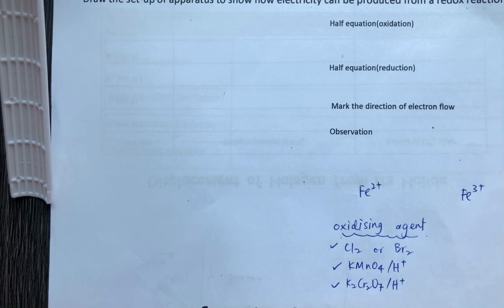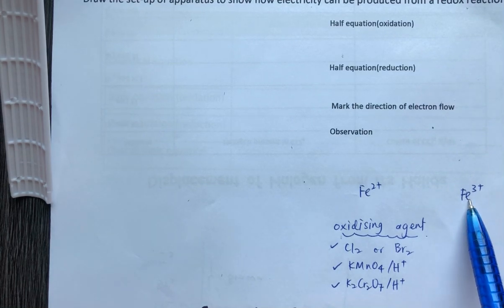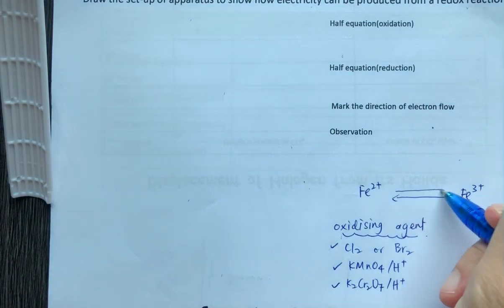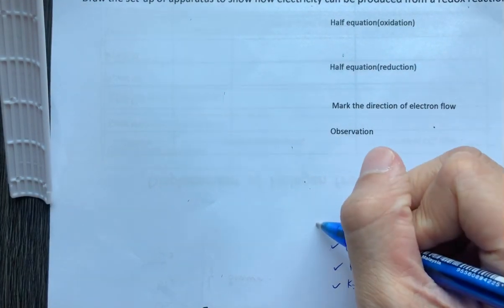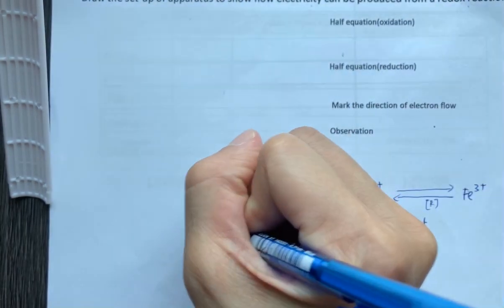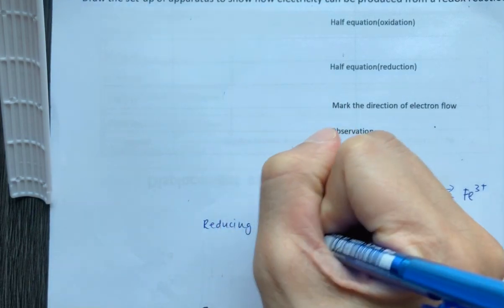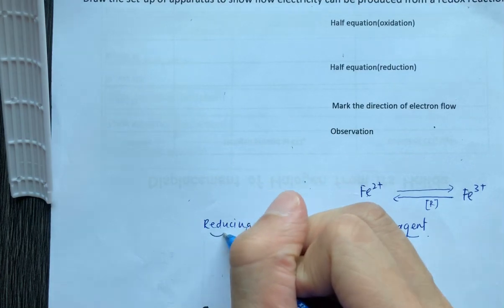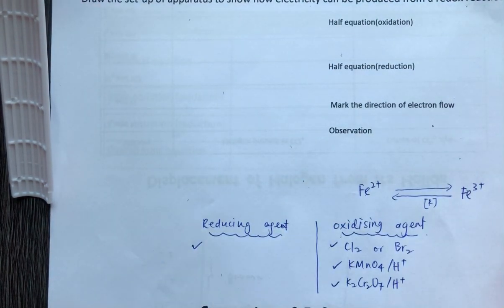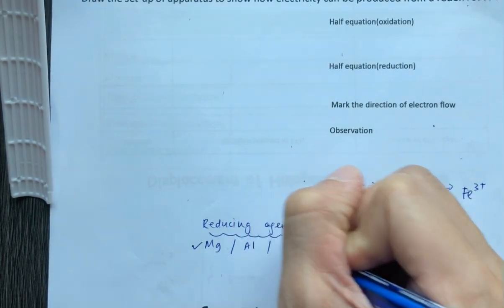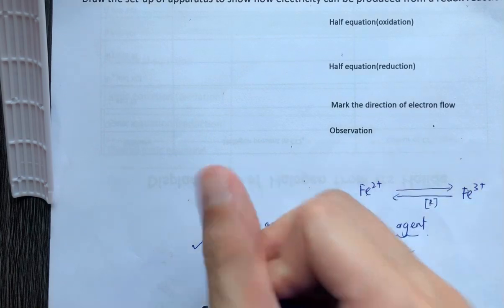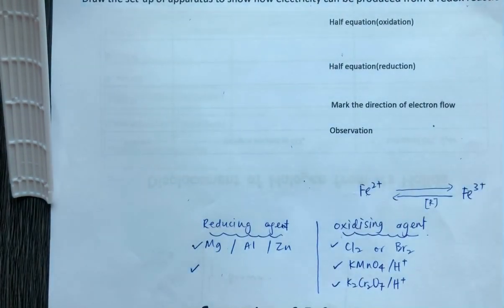The conversion of Fe3⁺ back to Fe2⁺ is a reduction reaction. For this reaction to take place, we use a reducing agent. Examples of reducing agents include reactive metals such as magnesium, aluminum, or zinc, and also halides — that is, Group 17 elements in the form of a compound or ion.